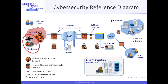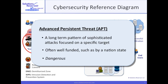Bad actors seek to exploit IT systems. They can be individuals, criminal groups, or even nation states. We'll only be considering external bad actors. A class of bad actors called Advanced Persistent Threats, or APTs, can devote considerable time and expense in pursuit of a very specific target.